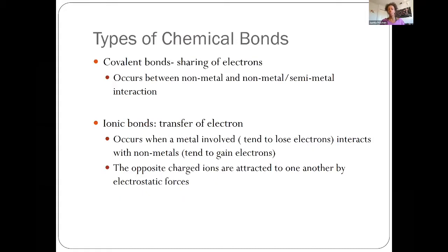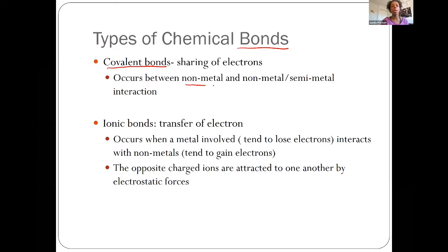In terms of how these elements come together, they come together through a process known as bonding. We're going to focus on two different types of bonds in this chapter. The first type is covalent bonds. If we break that word down: co- meaning shared, valent referring to valence electrons that are being shared to make this bond. Covalent bonding typically occurs when you have a non-metal and a non-metal coming together, or a semi-metal and a non-metal coming together.